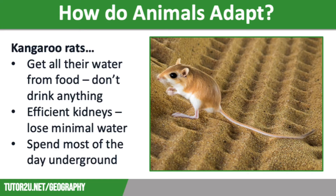We are going to talk about three animals in a little bit more detail. Our first desert animal is the kangaroo rat. Kangaroo rats get all the water they need from food, so they do not have to drink anything. They also don't lose water through perspiration, and they lose minimal water through urination, as their kidneys are highly efficient. They are also an example of rodents who spend most of their time underground in burrows, so they avoid the hot sun in the middle of the day.